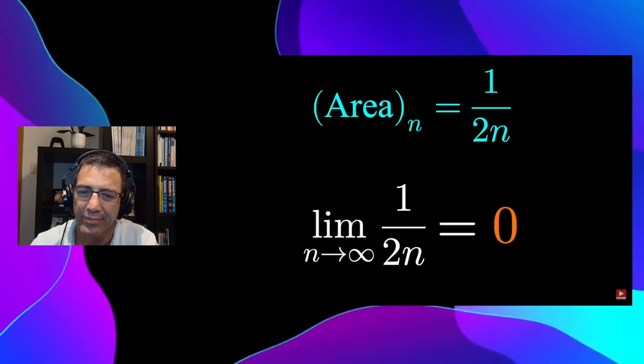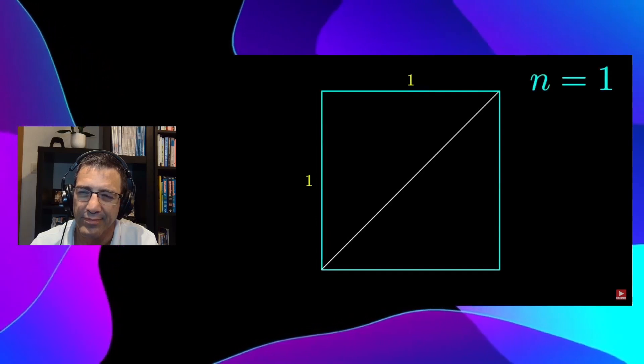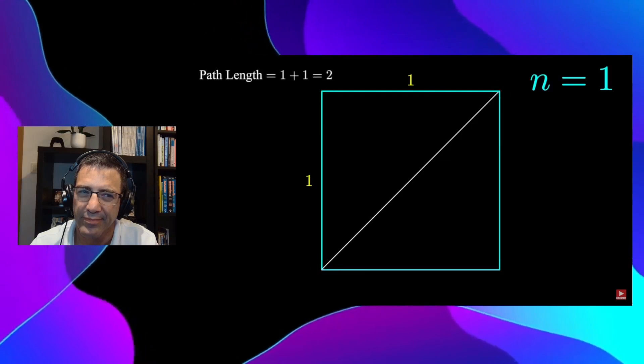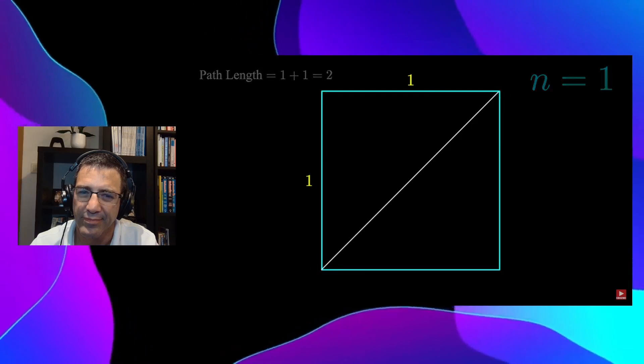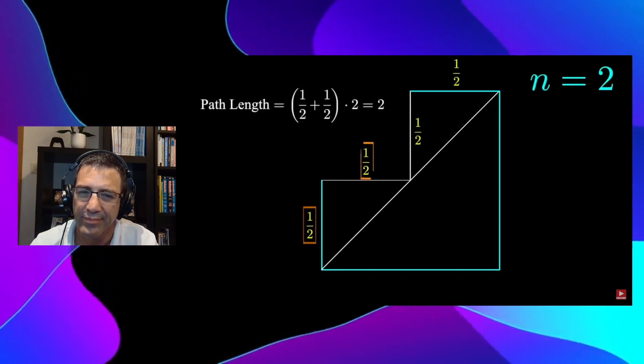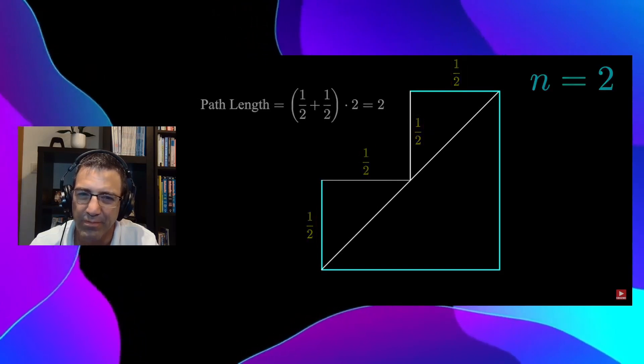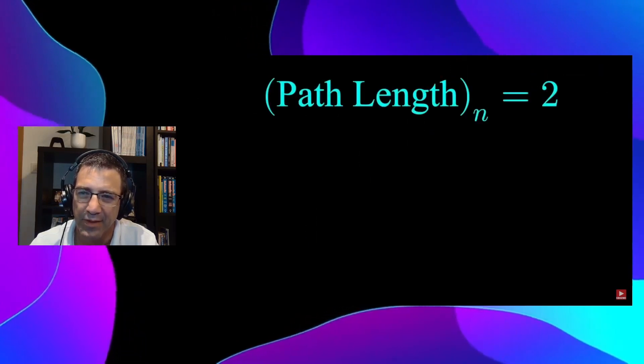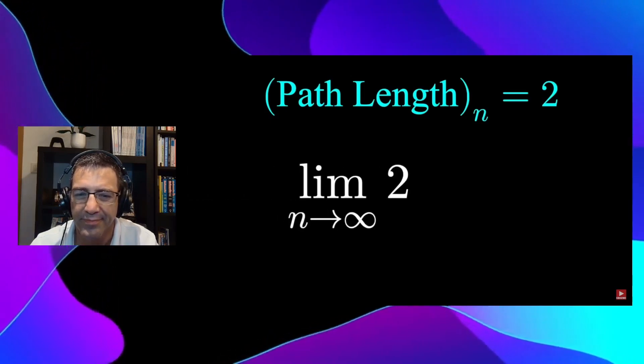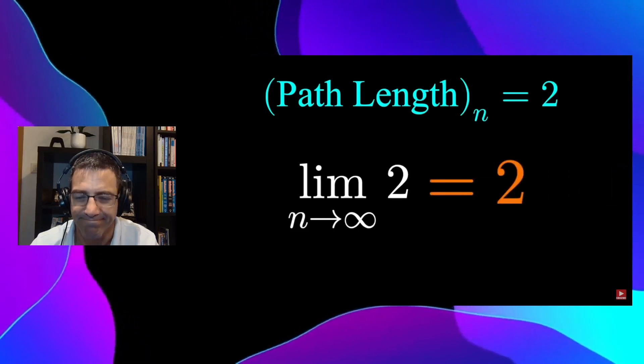However, if we do a similar process for the lengths of these paths, starting at n equals 1, the staircase has a path length of 1 plus 1, which is 2. At n equals 2, the staircase has path length ½ plus ½ times 2, which is 2. Still 2. Our path length is 2 regardless of what the iteration number is. And if we take the limit out to infinity, the limit of a constant is a constant, we still get 2.